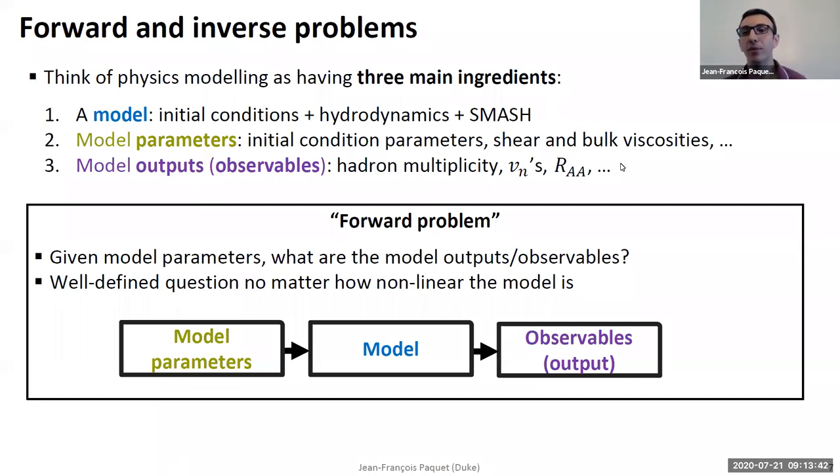Think of modeling a physics process as having three ingredients. You have the model itself, which in our case can be a Jetscape framework with initial conditions, hydrodynamics, and SMASH. This model has model parameters - initial condition parameters, shear and bulk viscosities, hadron cross-sections, anything you can think of. Given these parameters, the model will produce outputs, observables, that you want to compare with data to learn about those parameters.